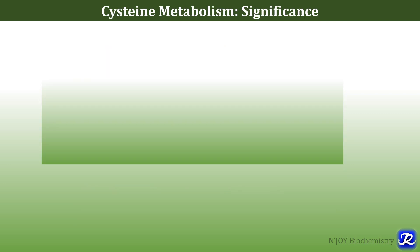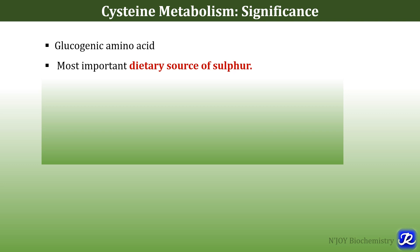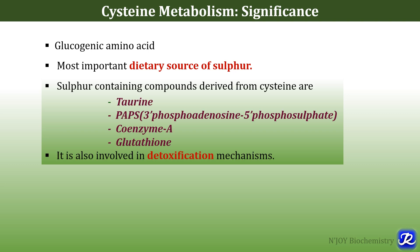The significance of cysteine metabolism: it is a glucogenic amino acid and an important dietary source of sulfur. Various sulfur-containing compounds are derived from cysteine — taurine (useful in conjugation of bile acids), PAPS (the active sulfur donor for sulfation of mucopolysaccharides and detoxification), coenzyme A, and the biologically important tripeptide glutathione (involved in reductive reactions, maintaining RBC integrity, and detoxification).